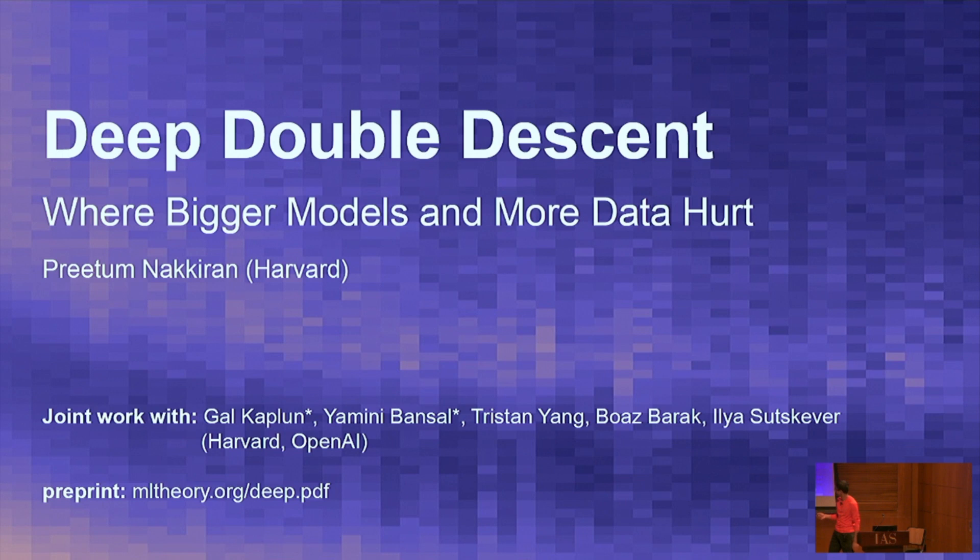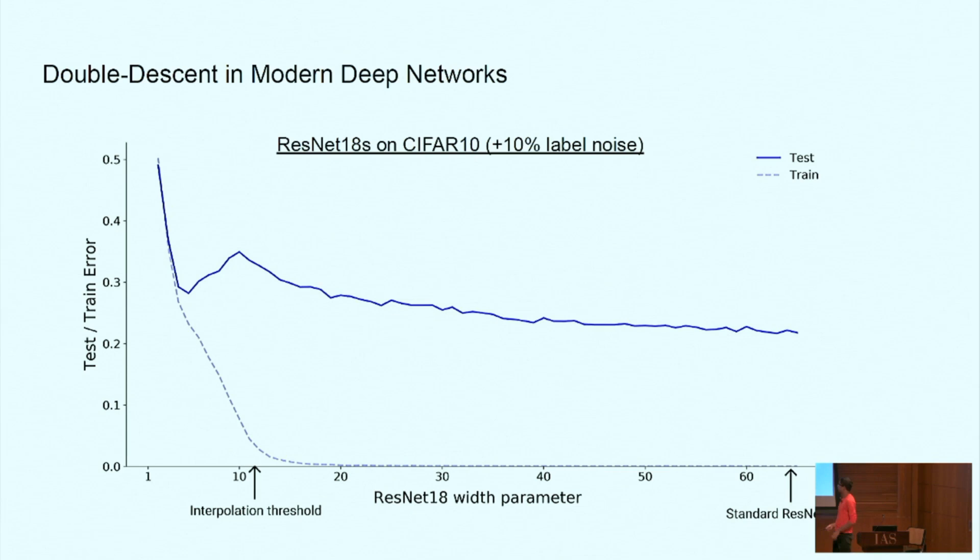I'm Preetham and I'll be talking about our work on Deep Double Descent which is an extension of the double descent phenomenon that Misha presented. This is joint work with Gal, Yamini, Tristan, Boas and Ilya. First we show that double descent continues to hold even for modern neural network architectures and training procedures.